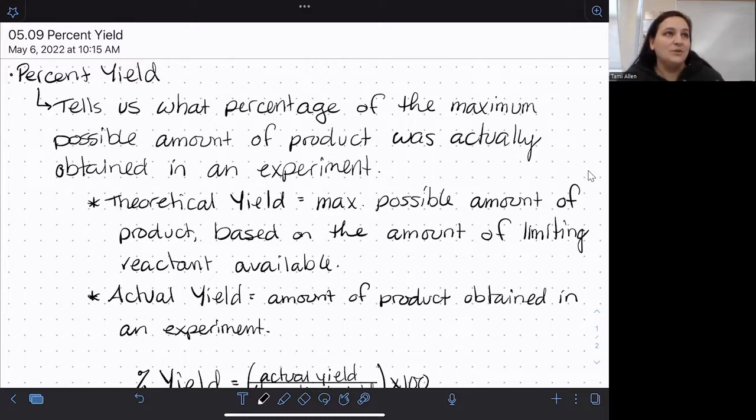Maybe you are isolating something out of a solution and you need it to dry completely. If it doesn't dry completely, it might actually seem like you have too much product. So if you do everything really well in a reaction, most reactions, you should get around 100% yield.